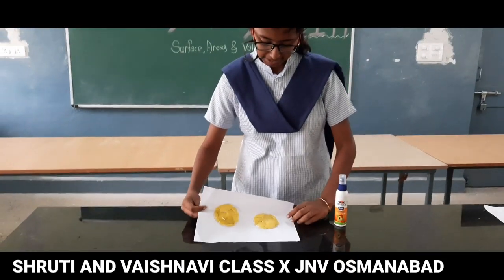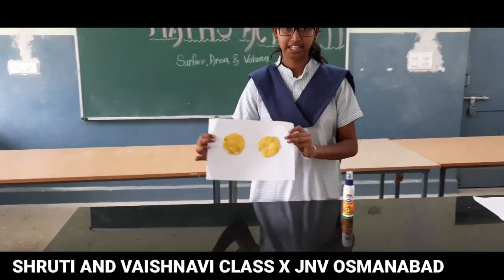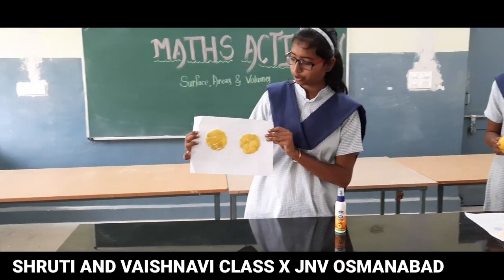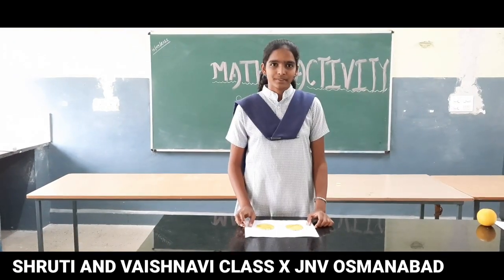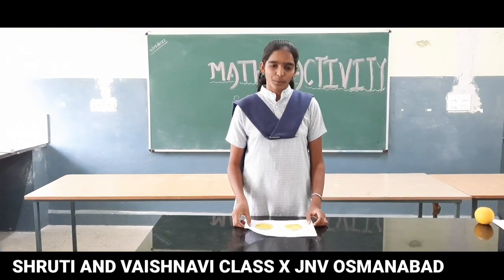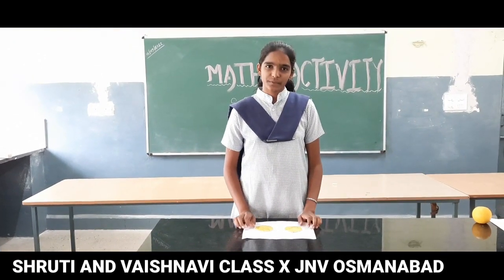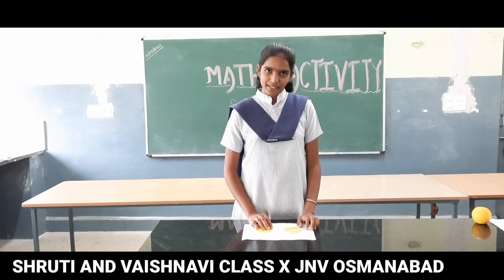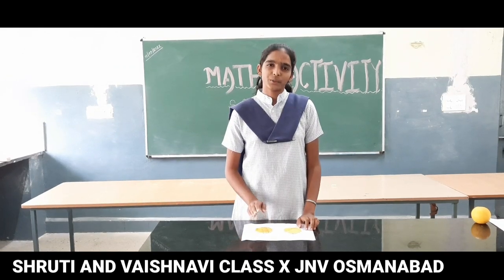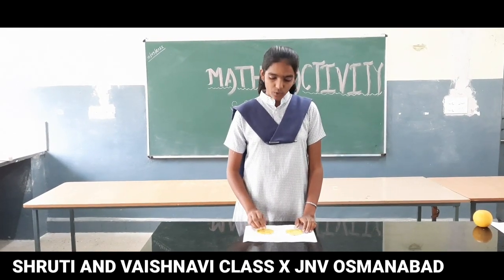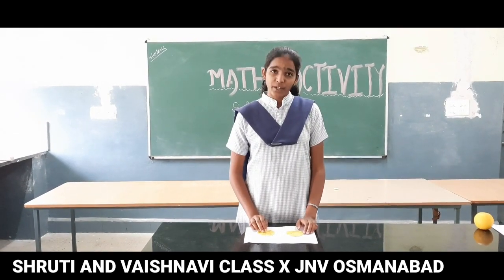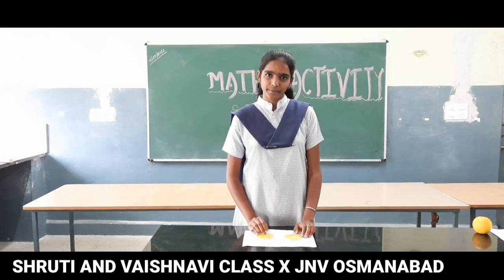We can see that the hemispherical sweet lime is equally divided. From this we can conclude that the curved surface area of the hemisphere covers exactly two circles. Therefore, the curved surface area of a hemisphere is equal to 2πr².